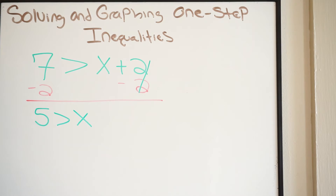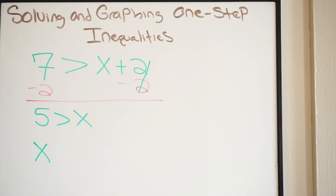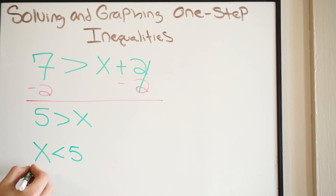In this case we are not in the right format — we want variable, inequality, number, but we have number, inequality, variable. So we need to rewrite this. We write x, then look at the inequality. If you think of it as Pac-Man or an alligator, it's eating the five, so when you rewrite it, make sure it's still eating the five. That gives us x < 5 in the correct format.